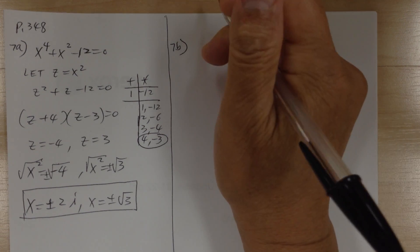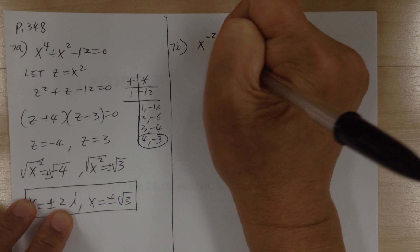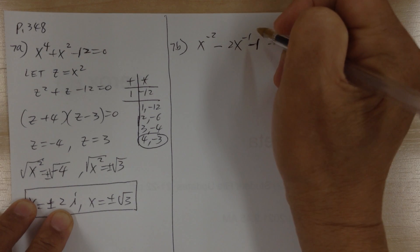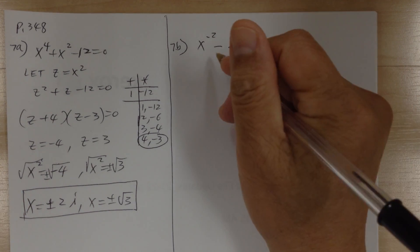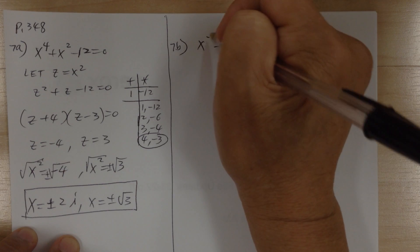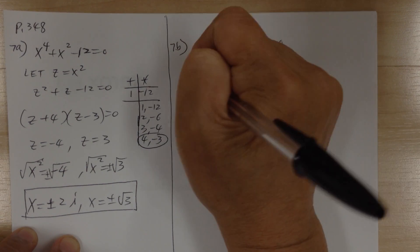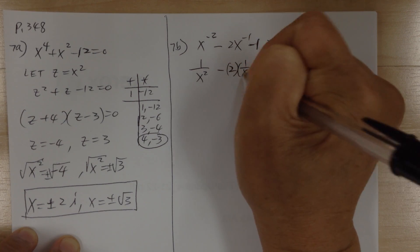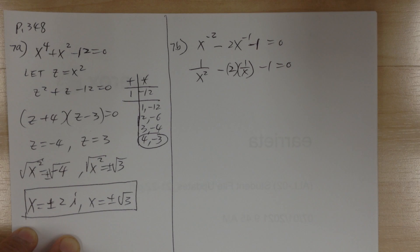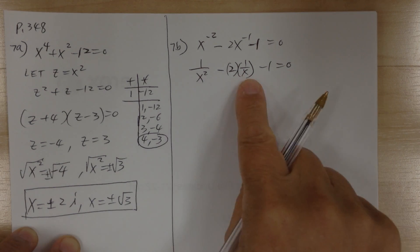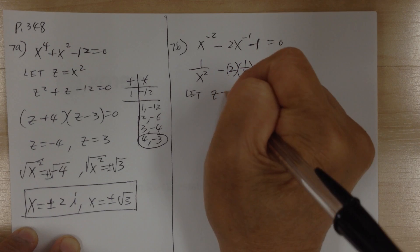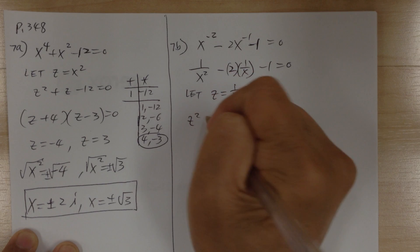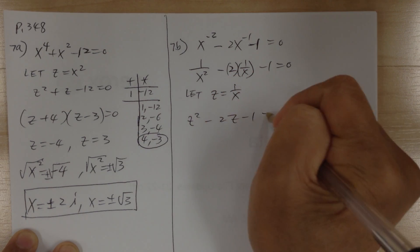For 7b, you have x⁻² − 2x⁻¹ − 1 = 0. Rewrite with positive exponents: 1/x² − 2(1/x) − 1 = 0. Since 1/x² is the square of 1/x, let z = 1/x. This gives z² − 2z − 1 = 0.